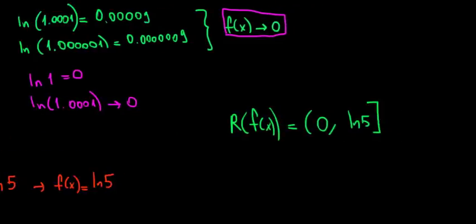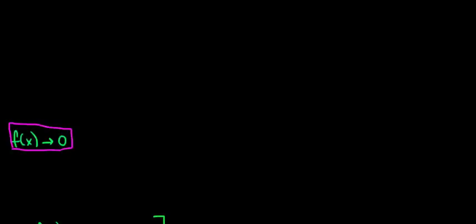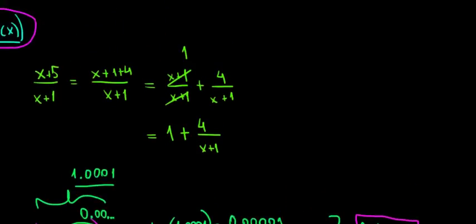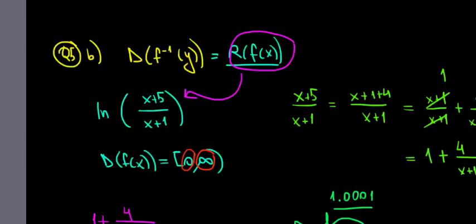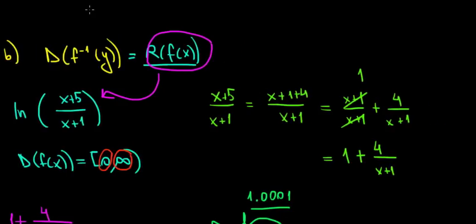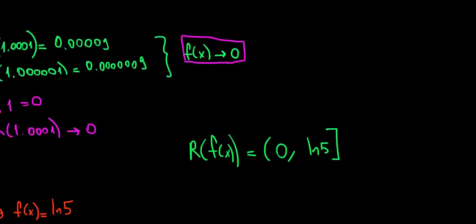Now, what is the range of the original function? Remember, that's what we were looking for. That's our domain. That's the domain of the inverse. That's our answer. So, it means that the domain of our inverse function is from 0 to ln of 5. And that's it. We are done.